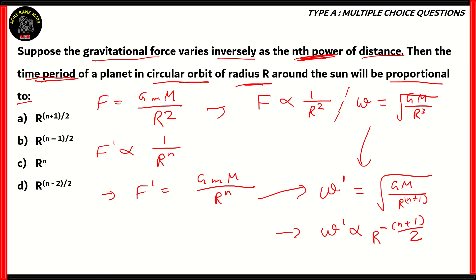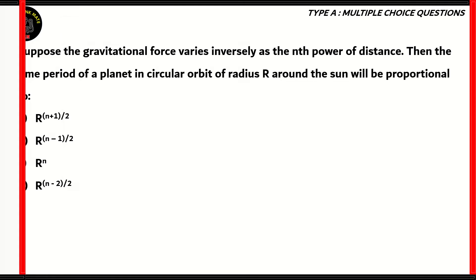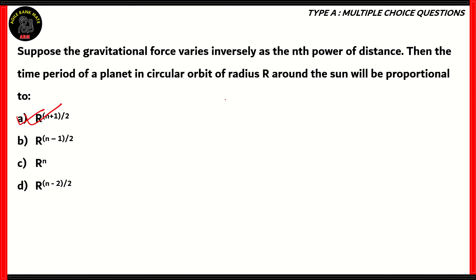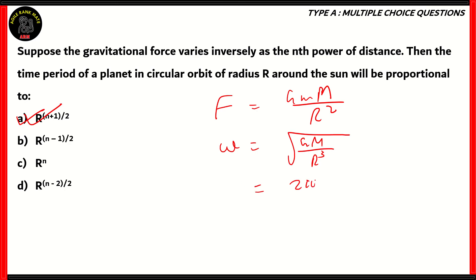The right answer for the question is option A: r raised to n plus 1 over 2. Basically, in this question, we use F equals GM over r squared, omega equals the square root of GM over r cubed, and omega equals 2 pi over T. Using all these equations and substituting the power of r from 2 to whatever power is given in the question, we can find out the right proportion for the time period.